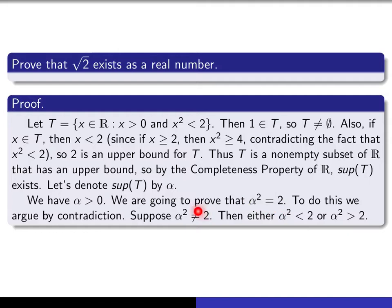We're going to show that if we assume alpha squared isn't 2, then it's impossible for it to be smaller than 2 or bigger than 2. On the next slide I'll show it's impossible for alpha squared to be smaller than 2, and on the slide after that I'll show it's impossible for it to be bigger than 2. The idea is: if alpha squared is smaller than 2, we should be able to make alpha a little bit bigger so that the square of the new number is still smaller than 2. That new number would be an element of T, contradicting the fact that alpha is an upper bound for T.